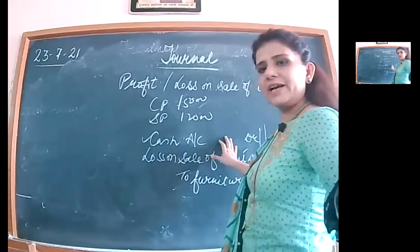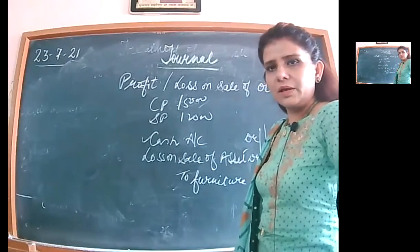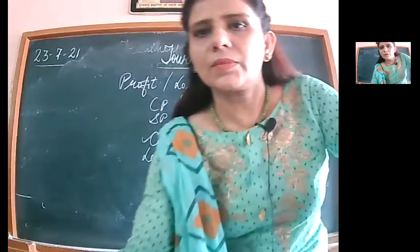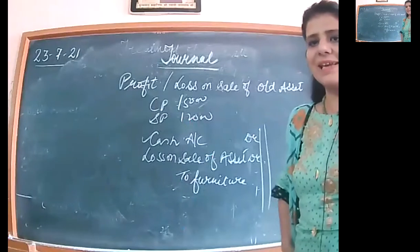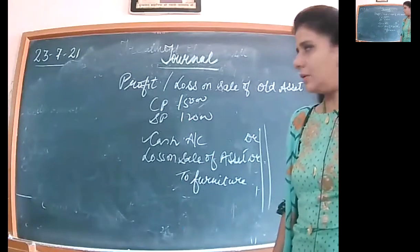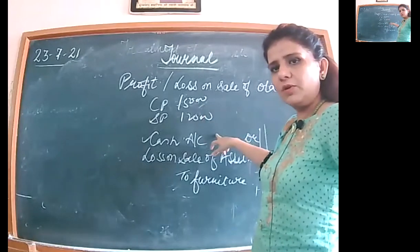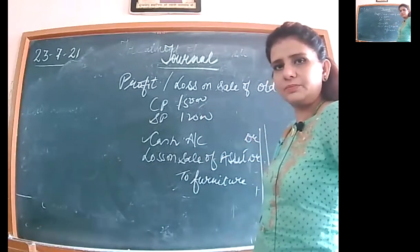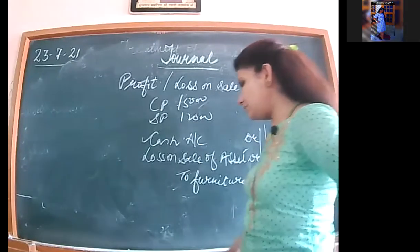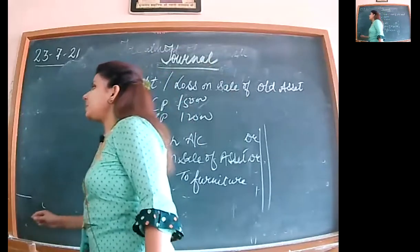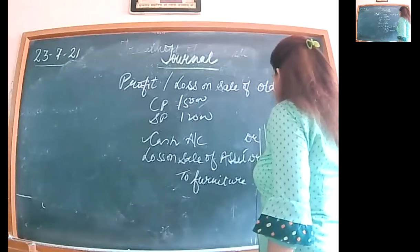Tell me with what amount cash is to be debited. Selling price is Rs. 12,000, cost price is Rs. 15,000 — with what amount is cash to be debited? It is Rs. 12,000. With the selling price, we always have cash. We have to sit with Rs. 3,000 — that's the loss.